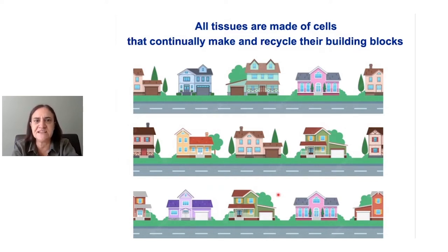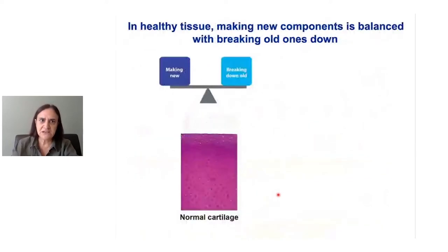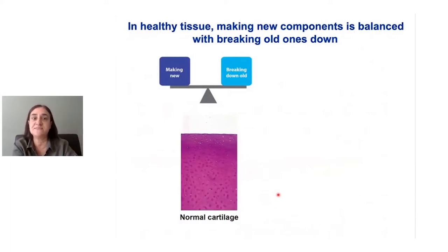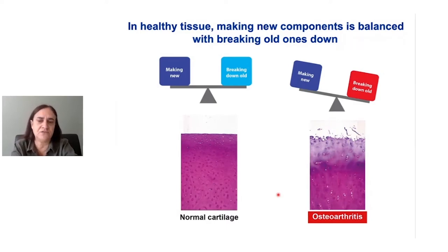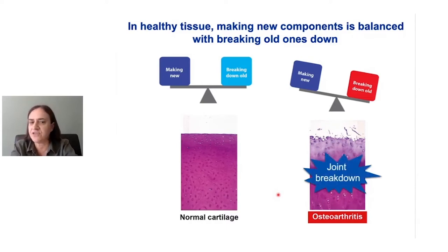This continual recycling — making and breaking down — is what keeps our cells healthy. In healthy tissue, the breaking down of old components is balanced with the making of new components, and it's this equilibrium that keeps the tissue healthy. In osteoarthritis, this balance is tipped towards breakdown. There's too much breaking down of old components; there is still making of new components, but more breaking down happens, and this leads to joint damage.